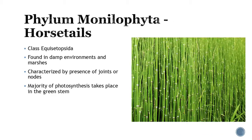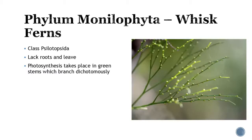Phylum Monilophyta includes the horsetails, which you're going to find mostly in damp environments and marshes. You're going to see these joints or nodes — that's how this phylum is characterized. Most of the photosynthesis happens in the stems since they don't really have leaves. There's also the whisk ferns, which lack roots and leaves entirely. You're going to see these green stems with little nodes that keep branching, and that's where photosynthesis takes place. There are no real leaves — it's kind of wispy, hence the name whisk ferns.